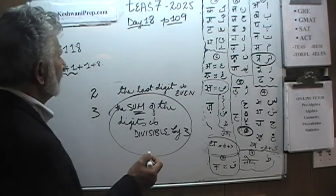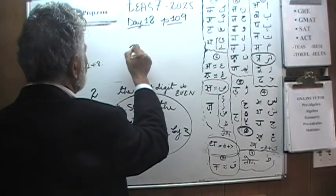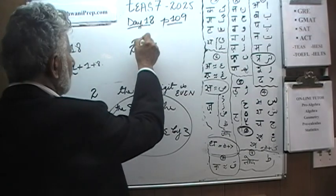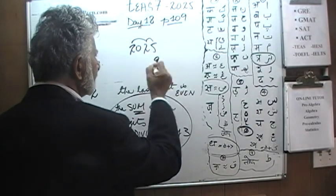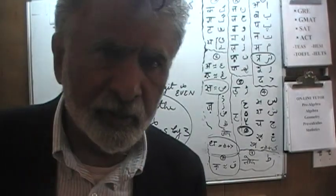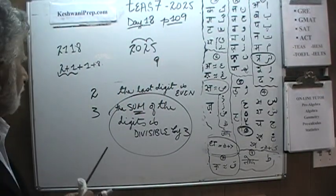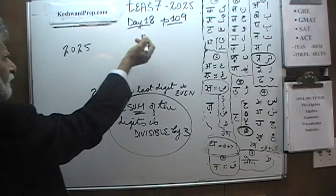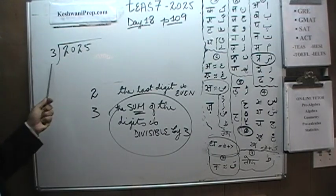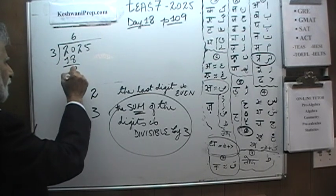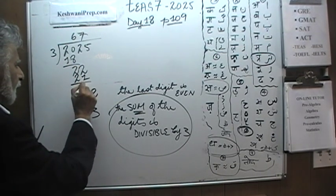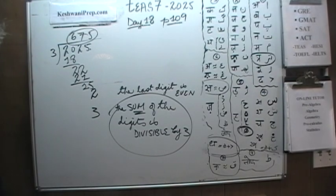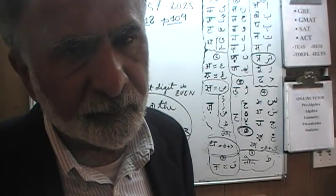How about this year: 2025? Is 2025 divisible by three? Two plus zero plus two plus five equals nine. The sum of the digits is nine, and nine is divisible by three, so 2025 is divisible by three. And if you don't believe me, you can do the long division and confirm it is divisible by three. But we didn't have to do it out — we can just tell by looking at it, because the sum of the digits happens to be nine.